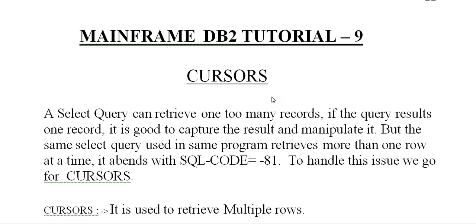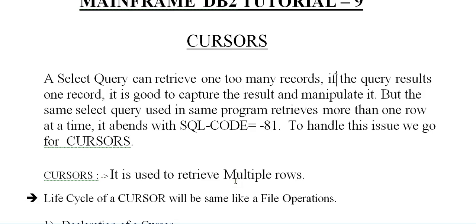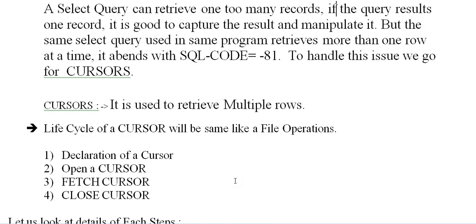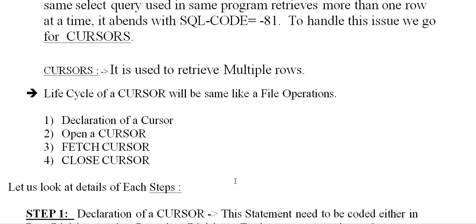In order to retrieve multiple rows at a time and do processing with the retrieved records, we go for Cursors. Let us see the life cycle of a Cursor — it will be the same as file operations. That is: declaration of a Cursor, open a Cursor, fetch a Cursor, and close a Cursor. Let us look into the details of each step.